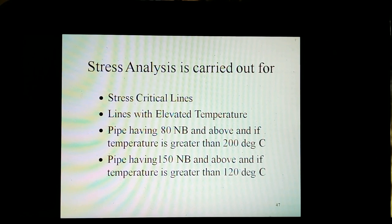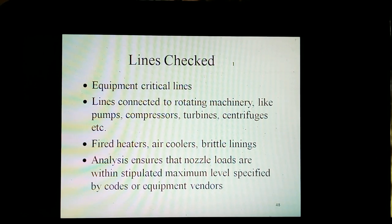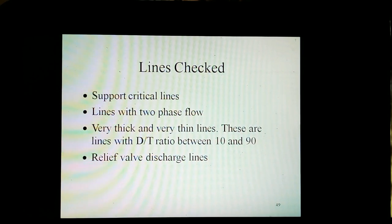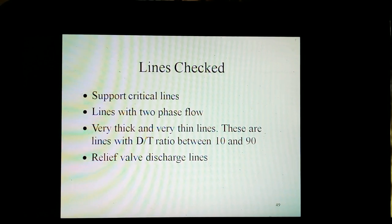Stress analysis is carried out for stress-critical lines — lines with elevated temperatures: pipe having 80 NB and above where temperature is greater than 200 degrees centigrade, and pipe having 150 NB and above where temperature is greater than 120 degrees centigrade. Also included are lines connected to rotating machinery like pumps, compressors, turbines, centrifuges, etc., fired heaters, air coolers, and griddle lines. Also known as lines checked are those to support critical lines, lines with two-phase flow, very thick and very thin lines with diameter-to-thickness ratio between 10 and 9, and pressure relief valve discharge lines.